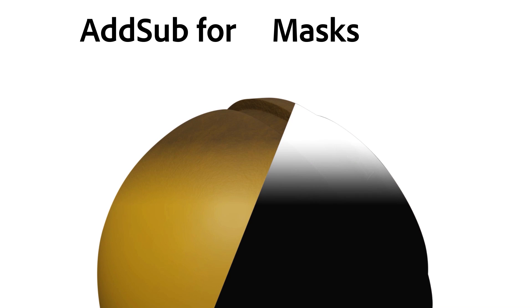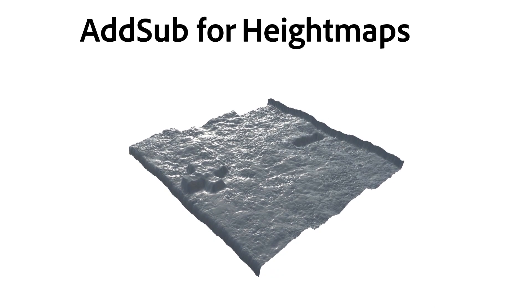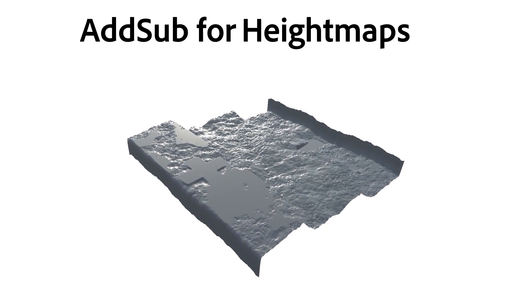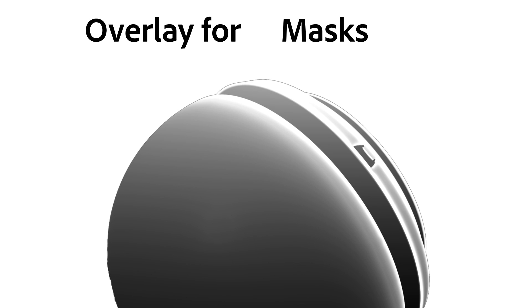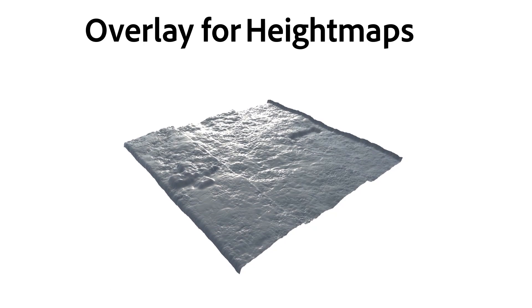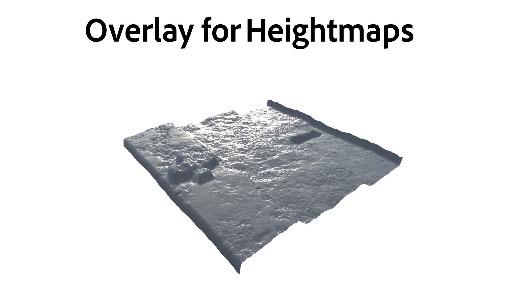Here's a recap: Add Sub for masks handles gradient transitions, replacing soft gradients with harsh details. Add Sub extrudes height maps both in and out, but easily hits limits with harsh results. Overlay is good for smoothly making your mask brighter and darker in a single step. And Overlay transforms your base height maps with balanced details, distorting it in two directions.